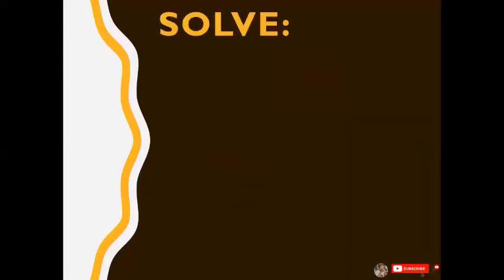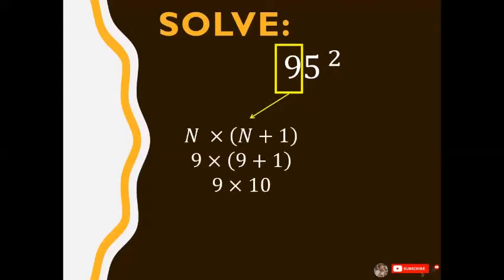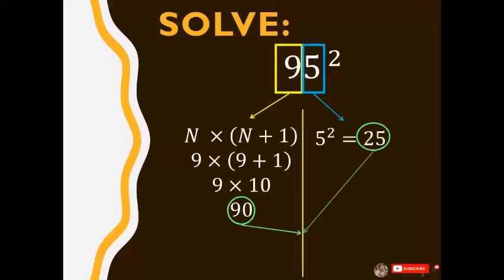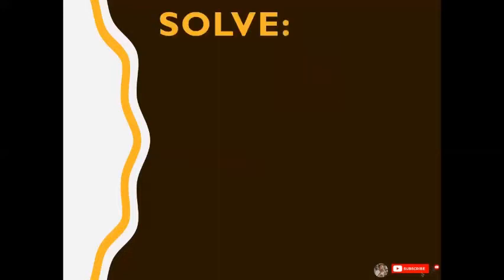Solve for 95 squared in 5 seconds. The answer is, what's your answer? It's 9025. Next, solve for 45 squared.